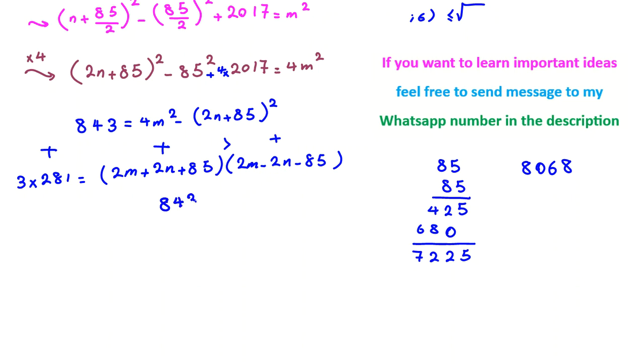But because n and 85 are positive, this one is smaller than this one. So the cases that we should check are 843, 1 and 3, 281. So this one, 281, 3.